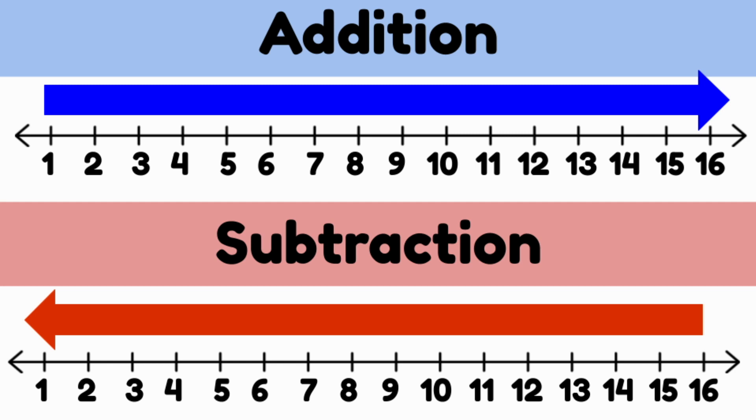Addition and subtraction are opposite of each other. In addition, we're always adding more and our answer is always greater than what we started with. In subtraction, the opposite is true. We always have less as our answer than what we started with.